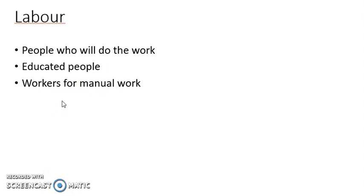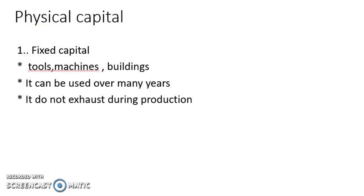After land and labor, the third important factor of production is known as physical capital. Physical capital includes two types of capital: one is known as fixed capital, and the other is known as working capital.